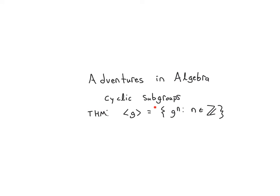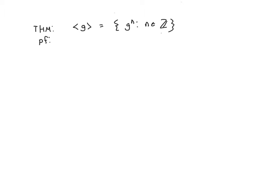In this video, we're going to look at the theorem we discussed in the last video and actually prove it. Given a group G and an element little g in our group, the smallest subgroup containing it is given by this set. So here's our theorem. What this is claiming is that the smallest subgroup — that's the definition of angle brackets g — it's the smallest subgroup of capital G that has little g as an element. And so what we want to prove is that the set on the right-hand side is, in fact, the smallest such subgroup.